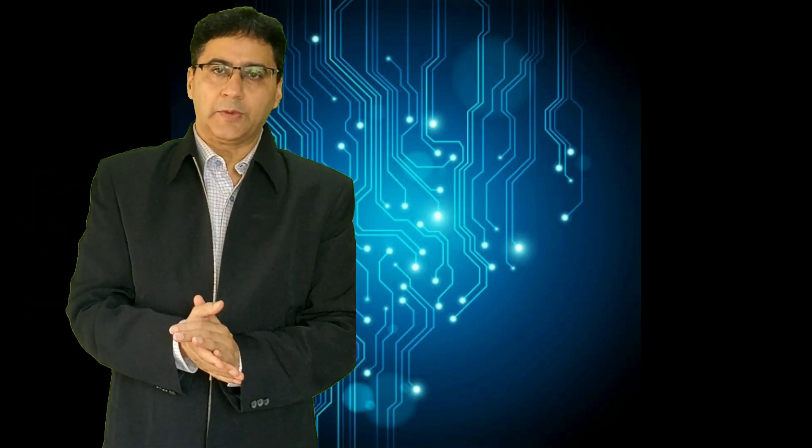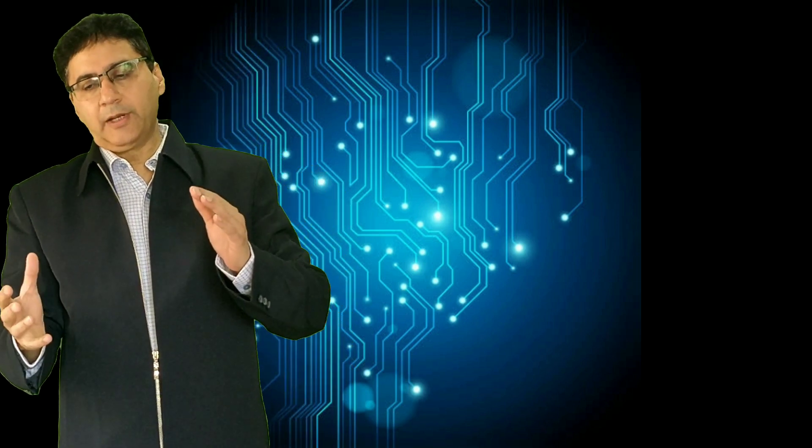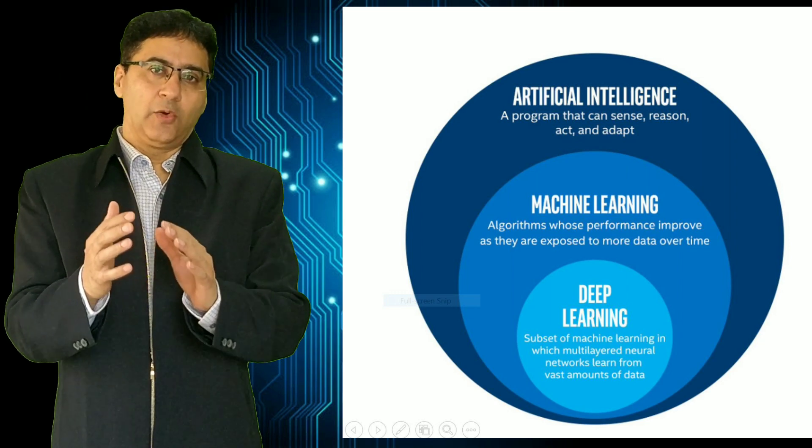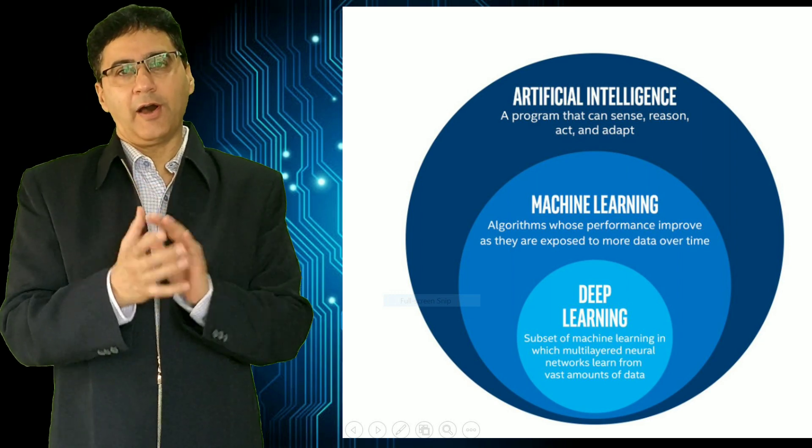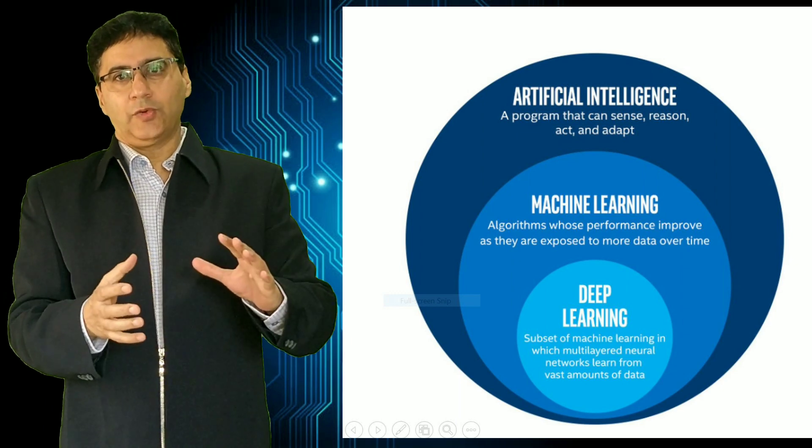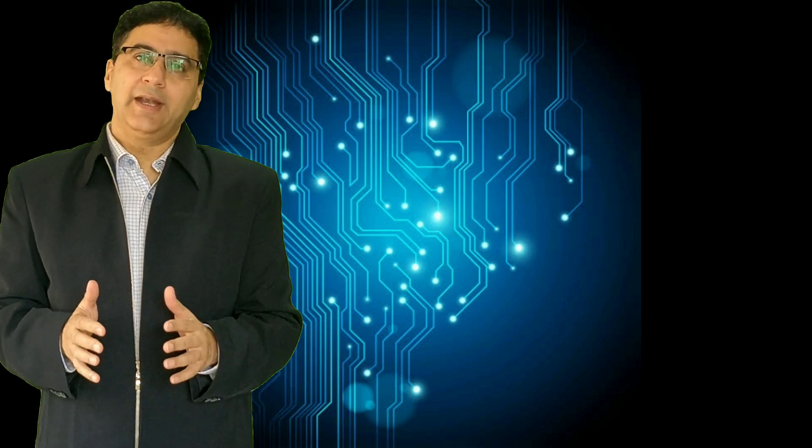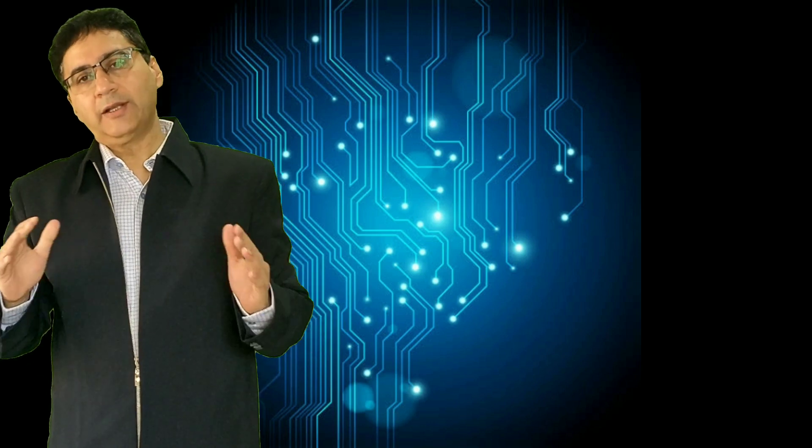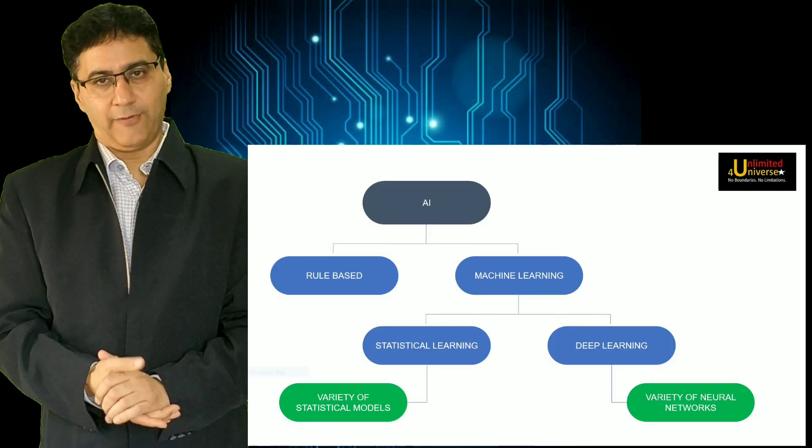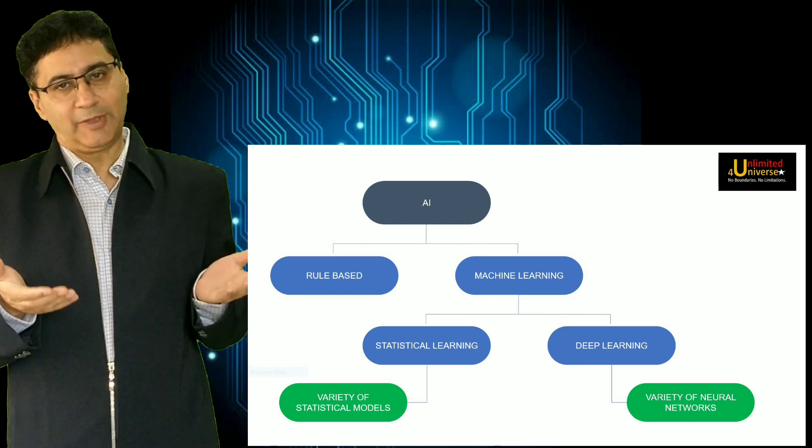So hence we have realized that deep learning is a subset of machine learning which is a subset of artificial intelligence. So though deep learning has gained a lot of prominence which is why some people confuse deep learning with artificial intelligence directly that these are synonyms. Some people confuse machine learning with artificial intelligence simply because these have gained prominence, but that does not mean these are the only things available in artificial intelligence. So if you look at the overall structure of artificial intelligence and the classification it looks something like this.